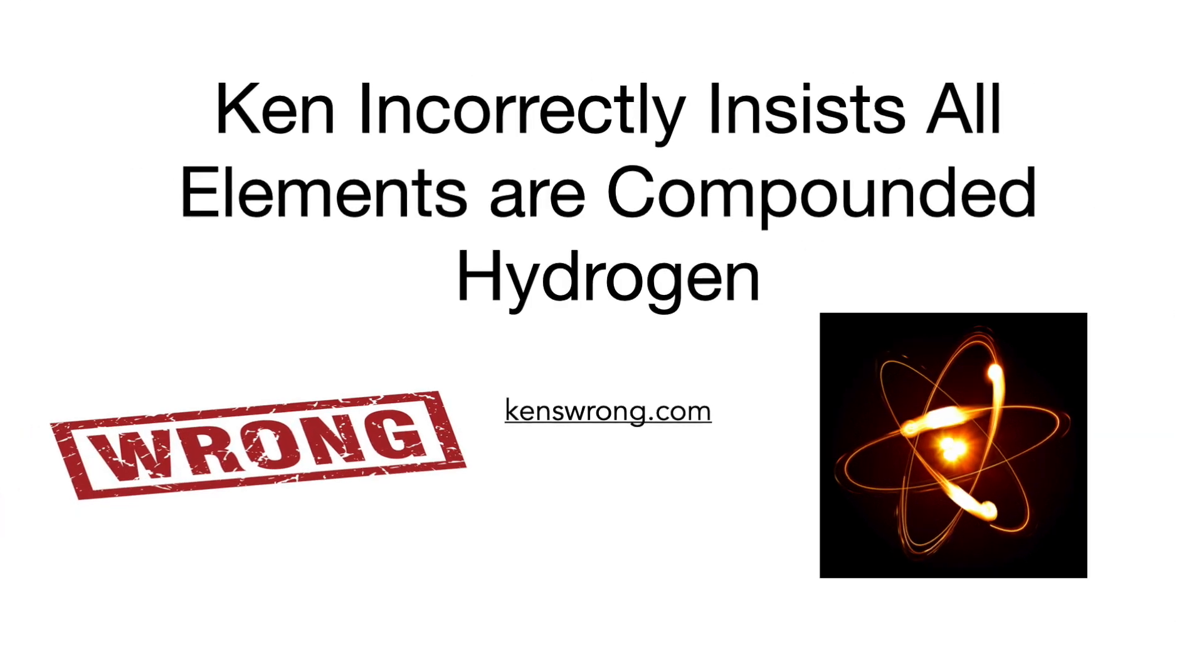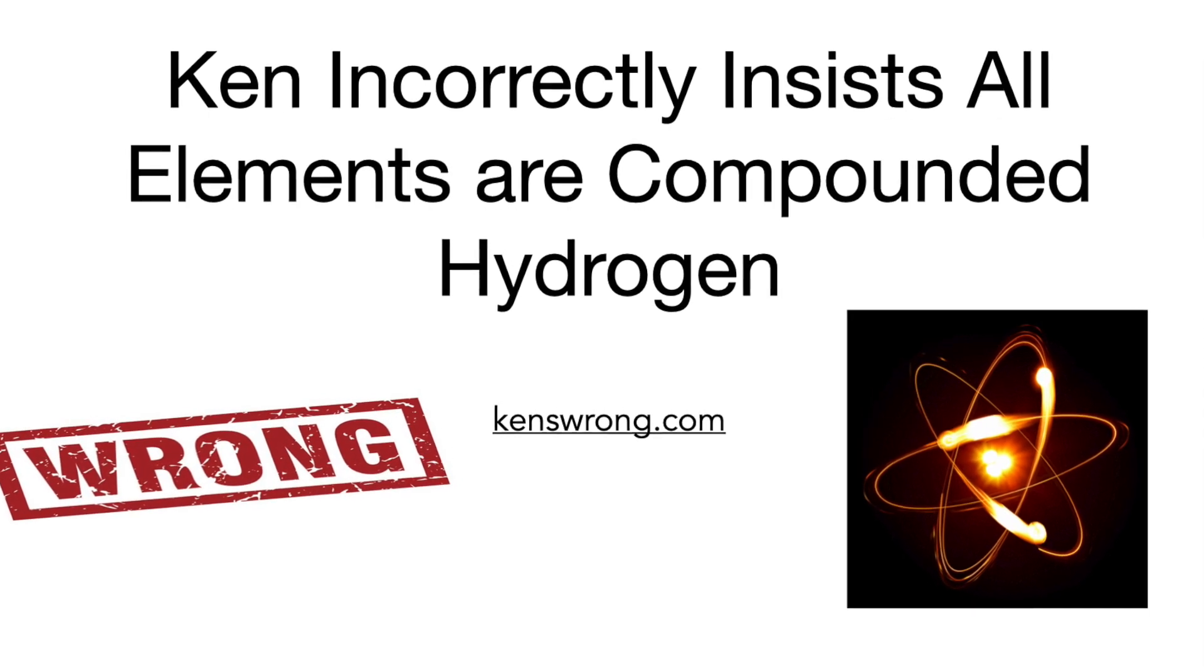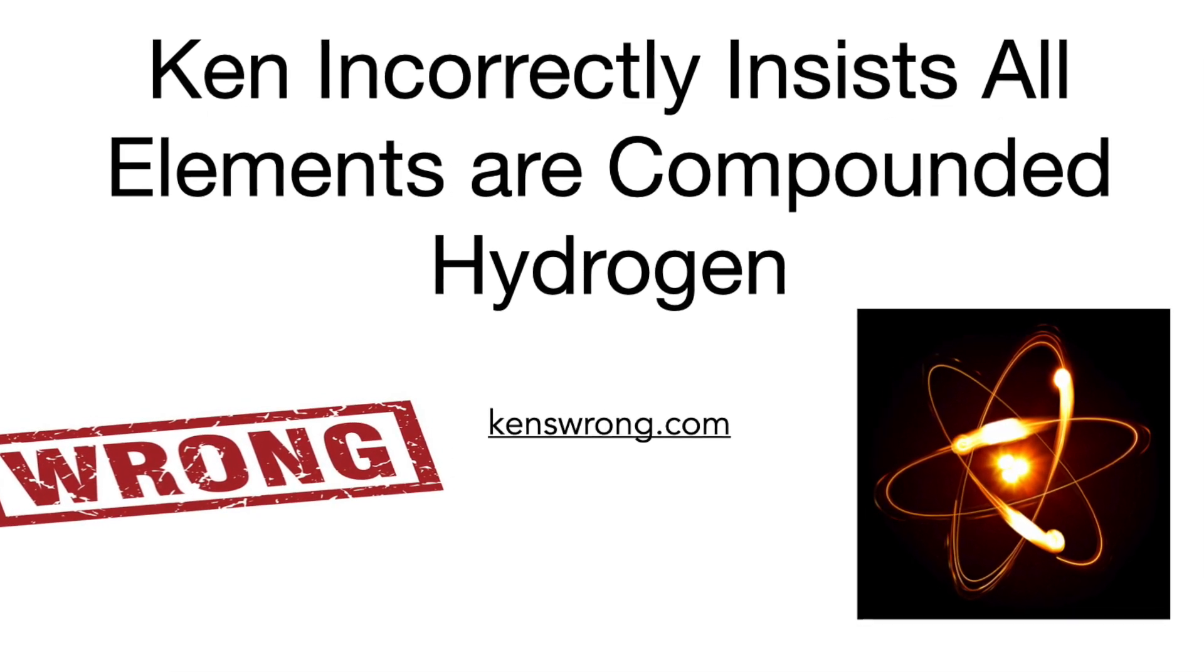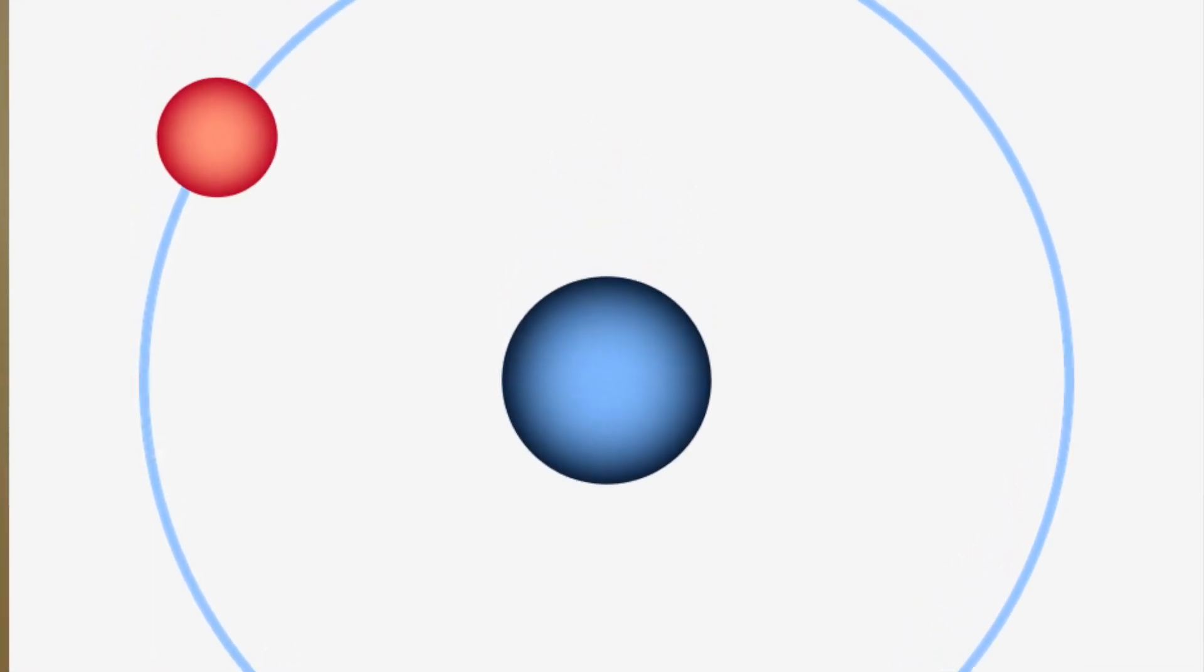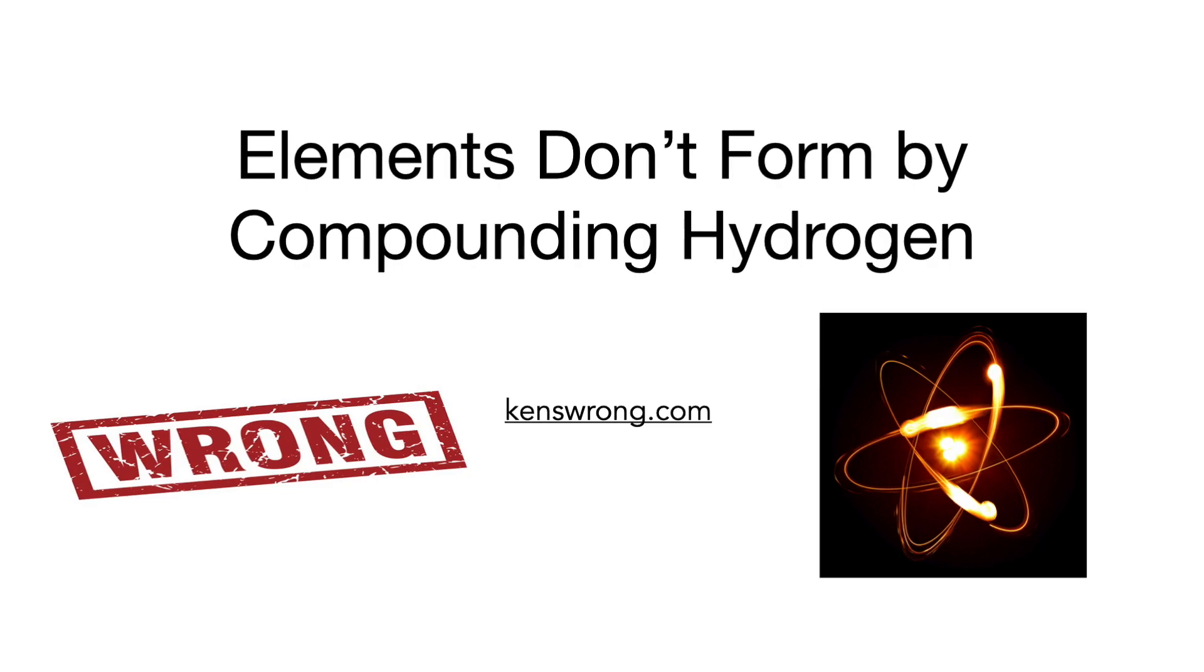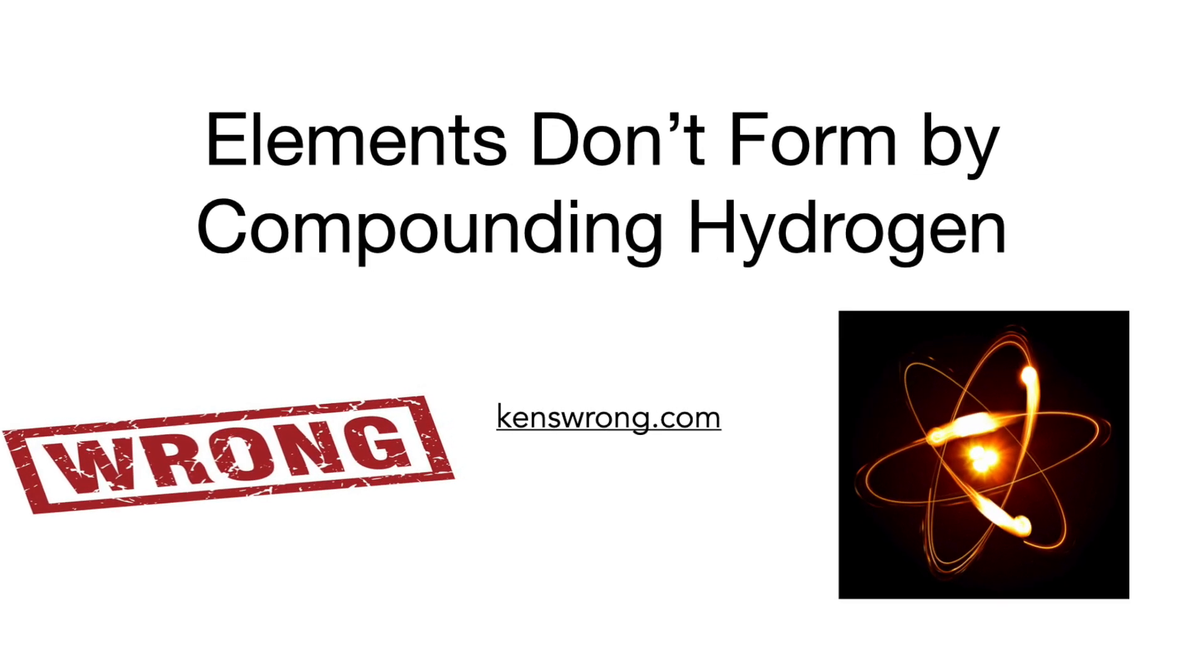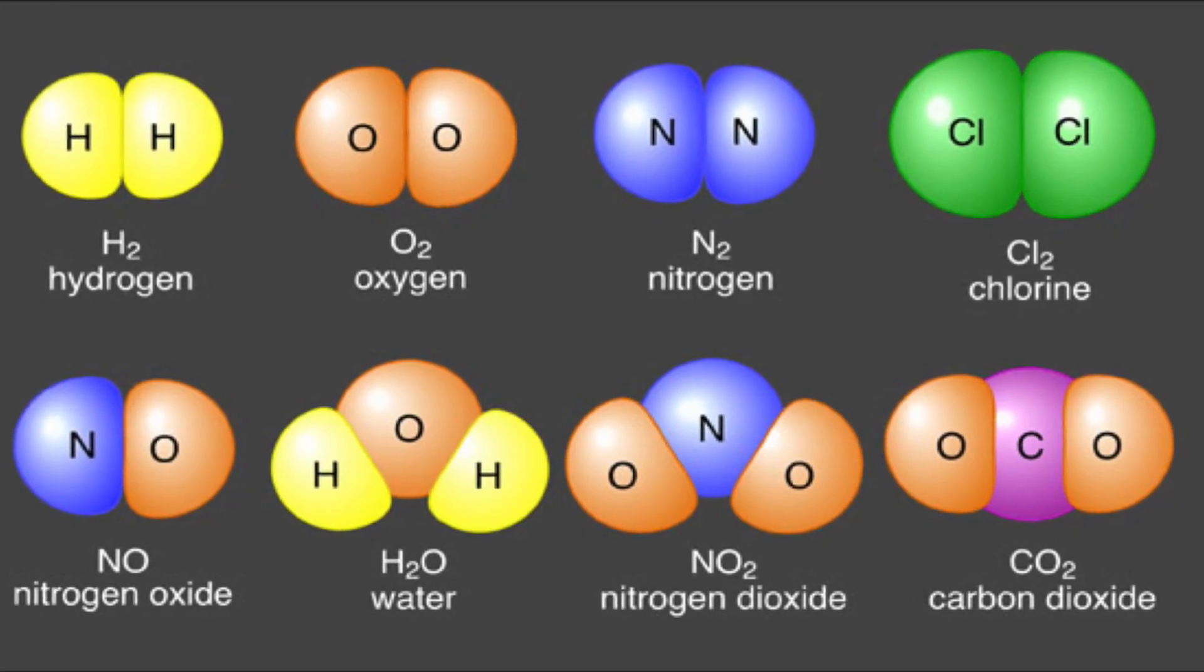Speaking of hydrogen, the Theoria Apophasis host insists that all chemical elements are compounded hydrogen. Hydrogen is the very simplest of all the elements. It consists of a single proton and a single electron. Elements don't form by compounding hydrogen. Elements can't be compounded by definition.